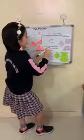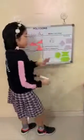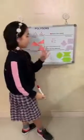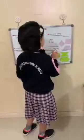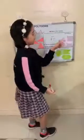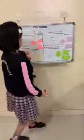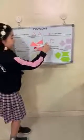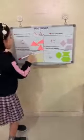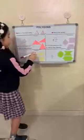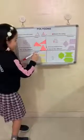Now let's read the questions. How are the quadrilaterals alike? They are alike — we have four sides, four vertices, and four angles. How are they different? We are different in the size and the length of the sides.